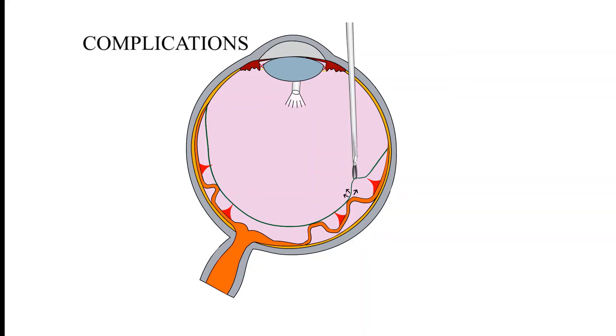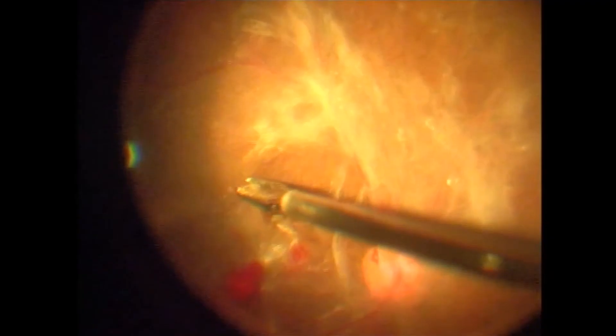The common complications encountered intraoperatively are retinal tears, retinal detachment and hemorrhages. You can see a hemorrhage developing at the posterior pole while peeling this membrane.